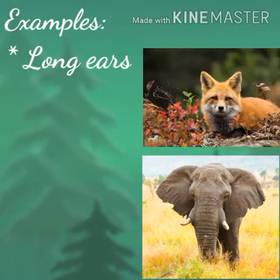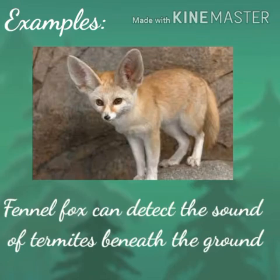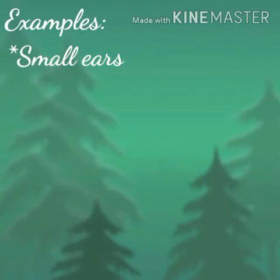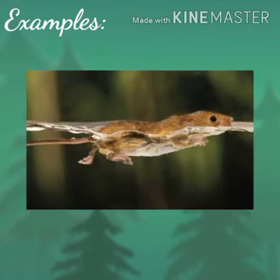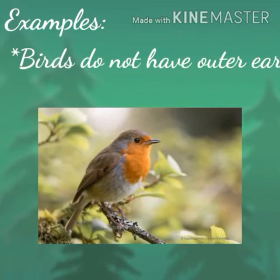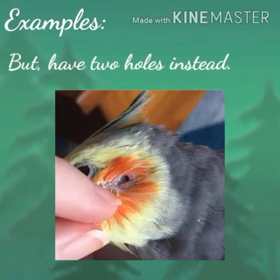Similarly, the fennec fox is able to detect sounds beneath the ground. It also uses its ears as radiators to get rid of body heat. Some animals have ears that are very small — for example, polar bear and rat have small ears which they can close completely while swimming. Birds do not have outer ears but they have two holes instead.